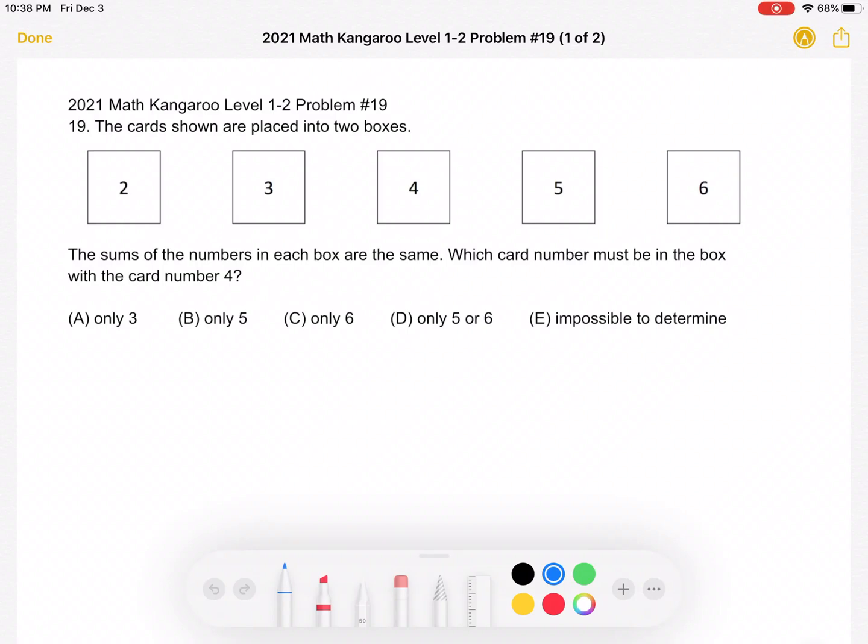This is the 2021 Math Kangaroo Levels 1-2 Problem number 19. The cards shown are placed into two boxes. The sums of the numbers in each box are the same. Which card number must be in the box with the card number 4?